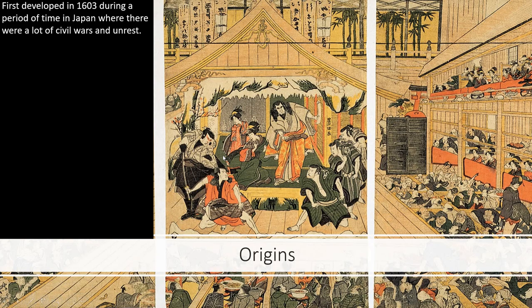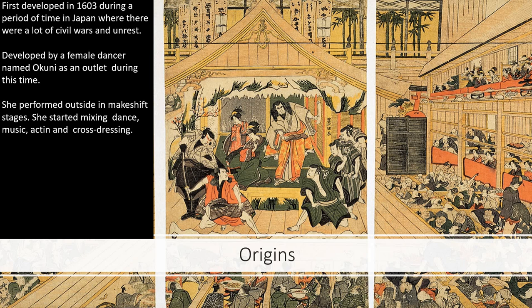Kabuki was first developed around 1603, during a period in Japanese history with a lot of wars and civil unrest. People really needed something to keep them entertained and hopeful. It was actually first developed by a female dancer named Okuni, as a form of escapism. She would perform not in a traditional theater but on makeshift, touring stages built from whatever communities were actually there in front of her.